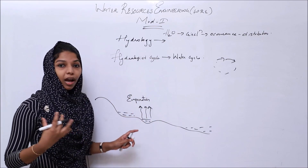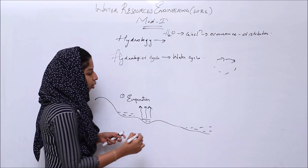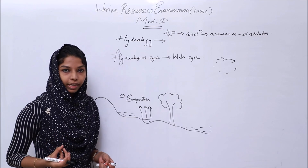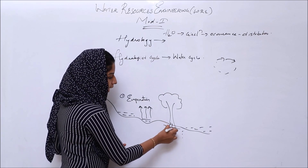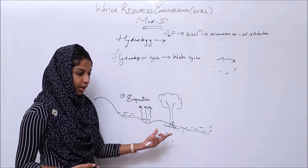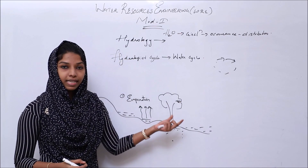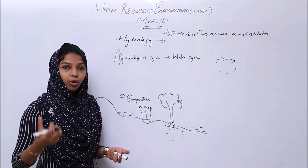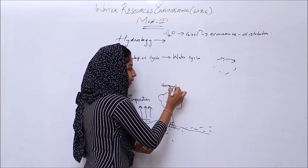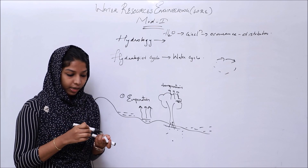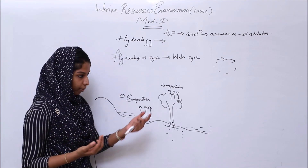Now we are talking about the components of the Hydrological Cycle. The first component is Evaporation. On the Earth's surface there are trees and plants and a soil surface. The moisture is converted and absorbed through the roots and plants. The moisture then stores on the underside of the leaves — that process is Transpiration.